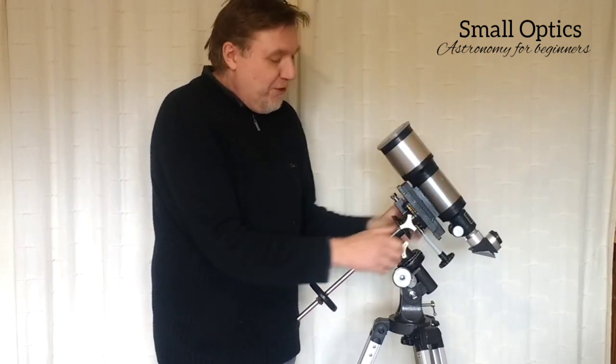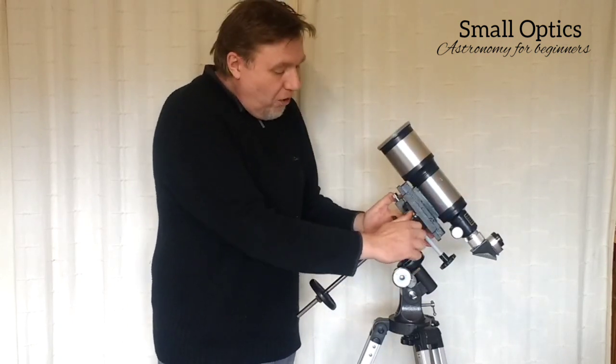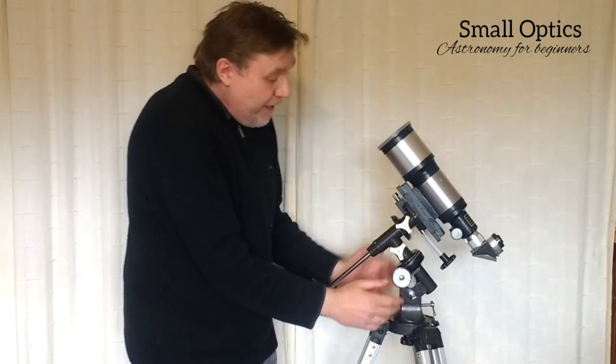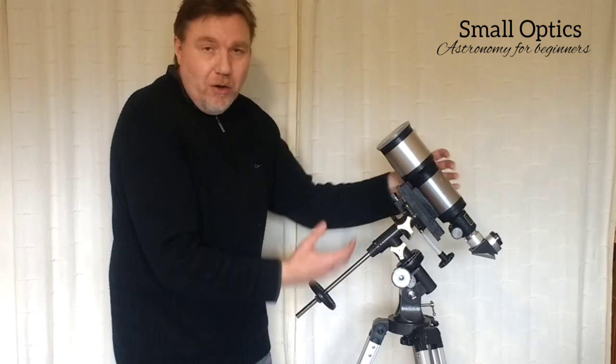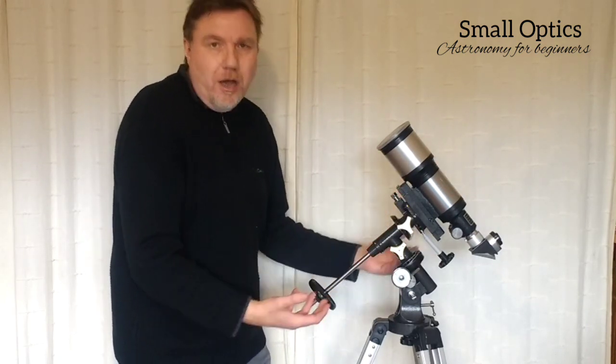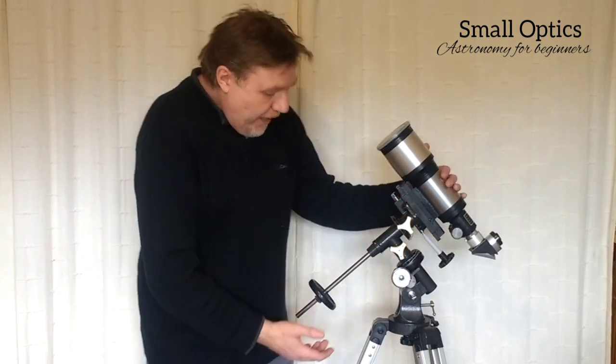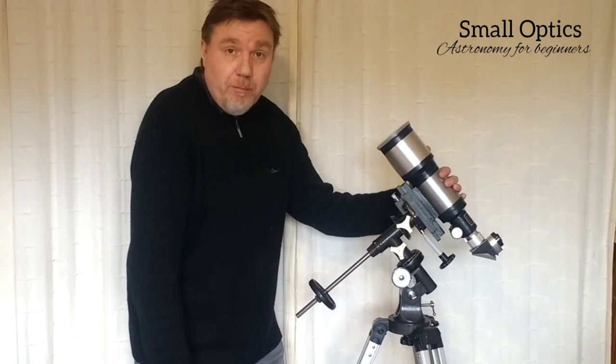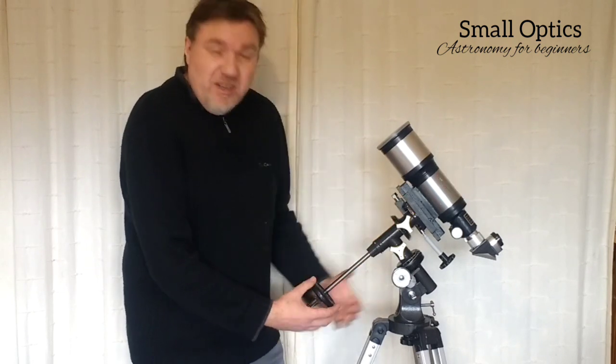So how do you know it's pointing north? One thing you don't do is turn your telescope and point it north. What's important is the mount itself that's pointing north. If you look at my telescope now, it's in what's called the neutral position or the starting position.